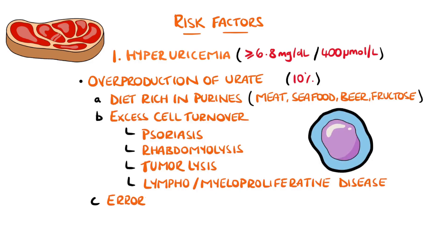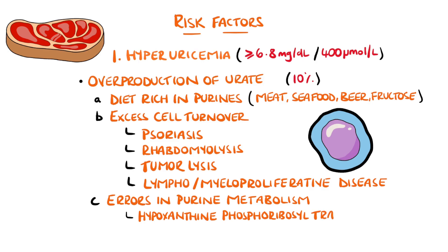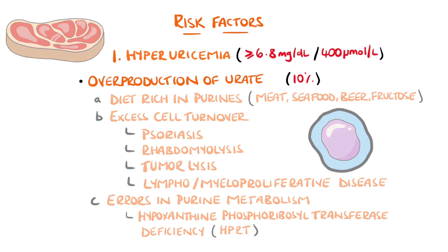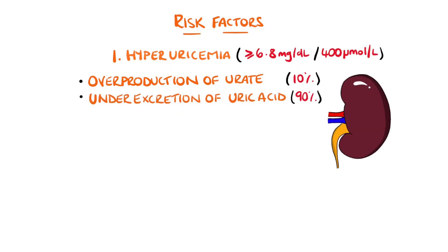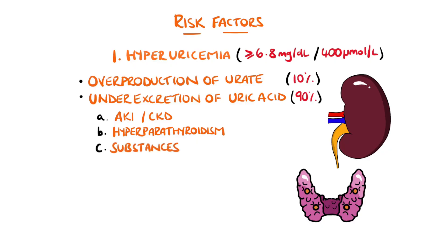Errors in purine metabolism, such as hypoxanthine phosphoribosyltransferase deficiency, can increase the amount of urate. Uric acid is primarily excreted through the kidneys, and to a smaller degree the gastrointestinal system. So acute kidney injury or chronic kidney disease can lead to reduced excretion, as can hyperparathyroidism, and certain substances like diuretics, aspirin, and even alcohol.